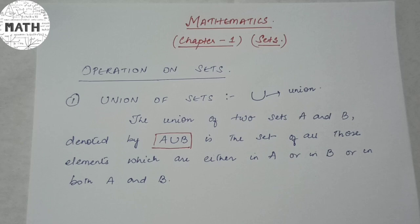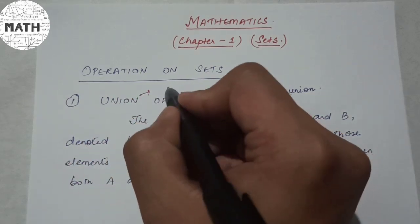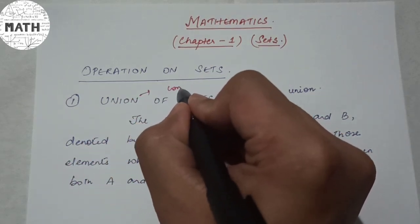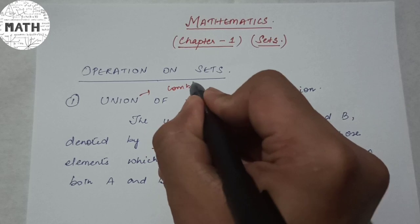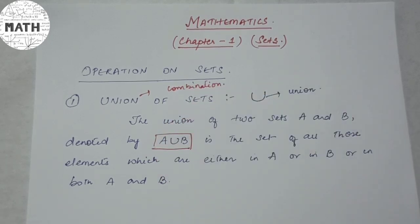Whenever union comes, it's very easy to understand in a simple manner. Union means nothing more than combination — I have to combine the elements of both sets. Let us do some exercises to understand what we mean by union of sets.